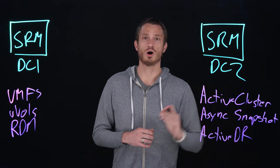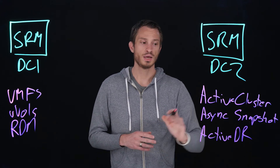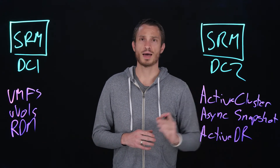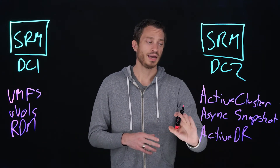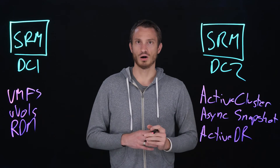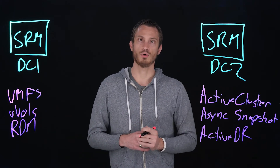ActiveCluster has zero RPO, async snapshots is in the minutes, and ActiveDR is sub-30 second RPO.